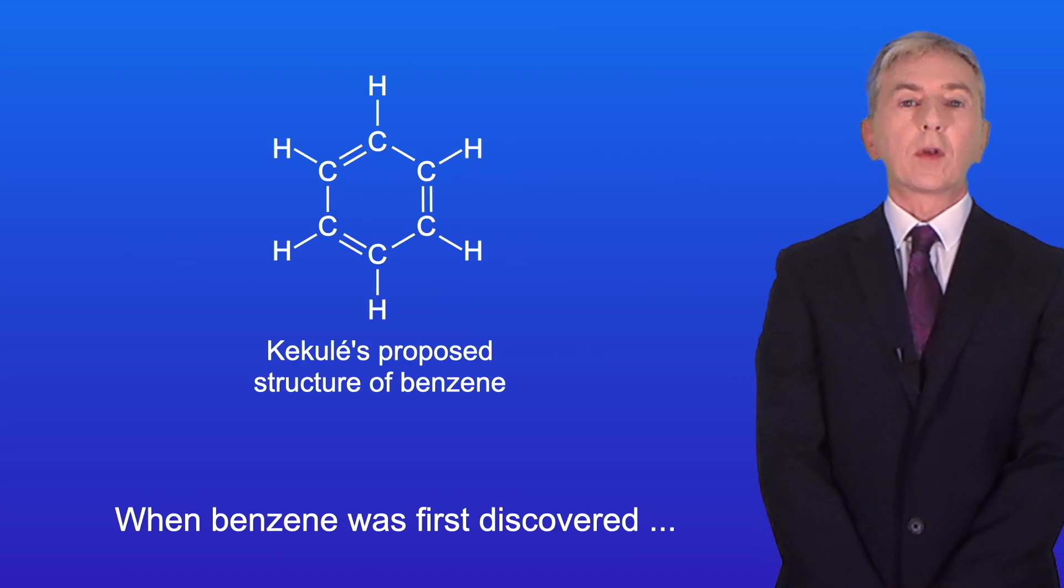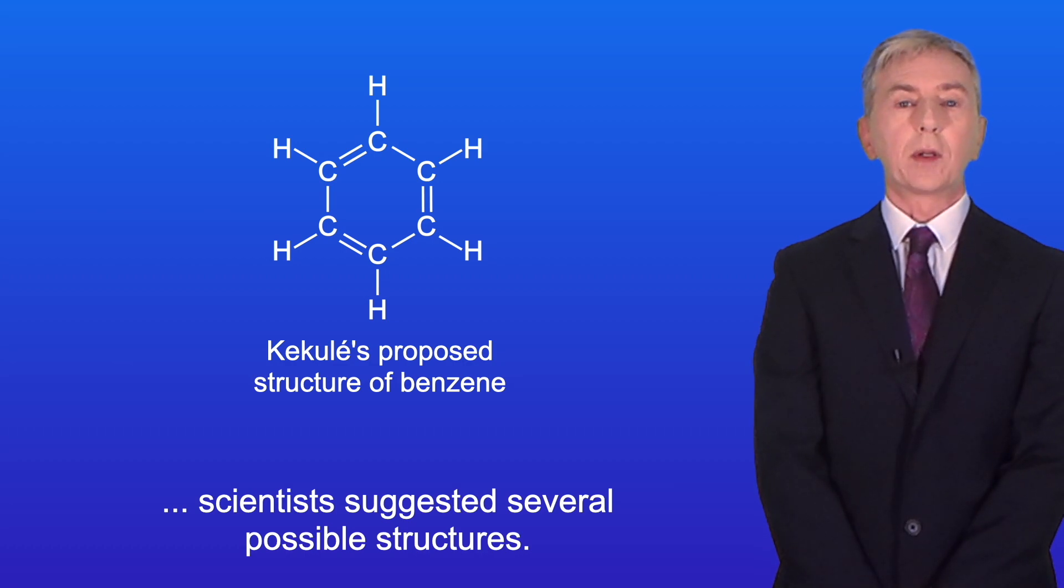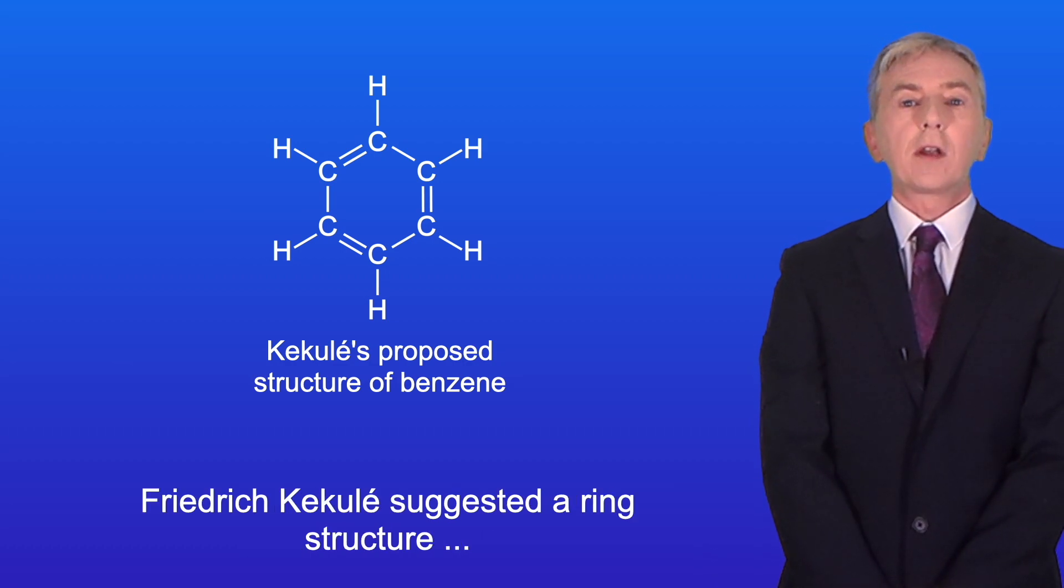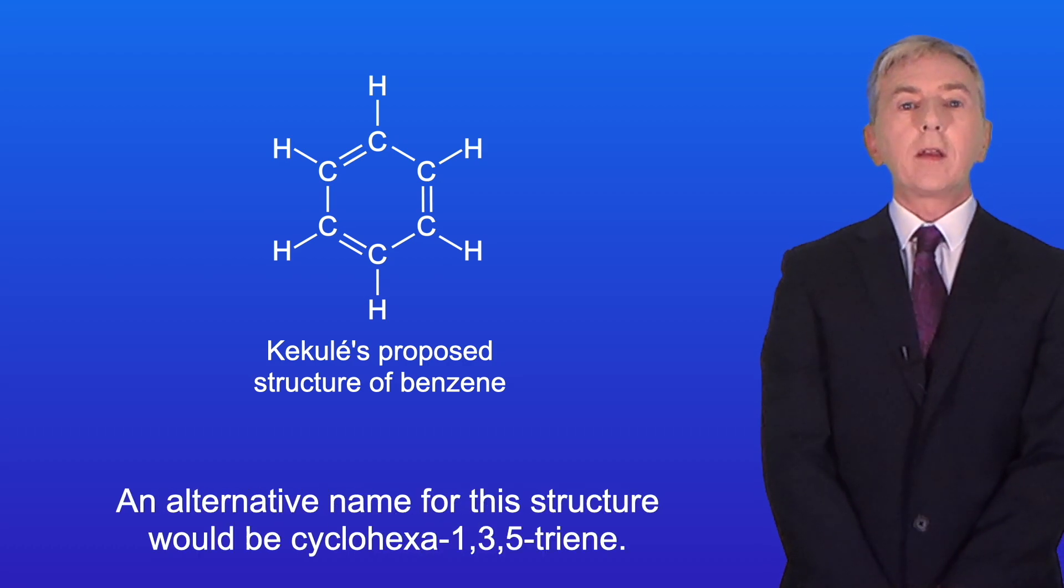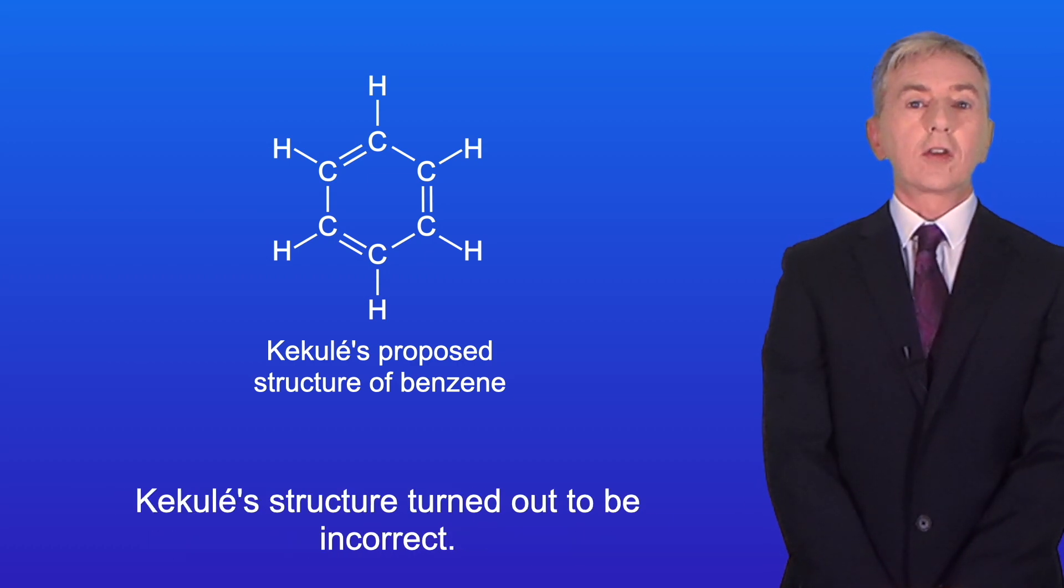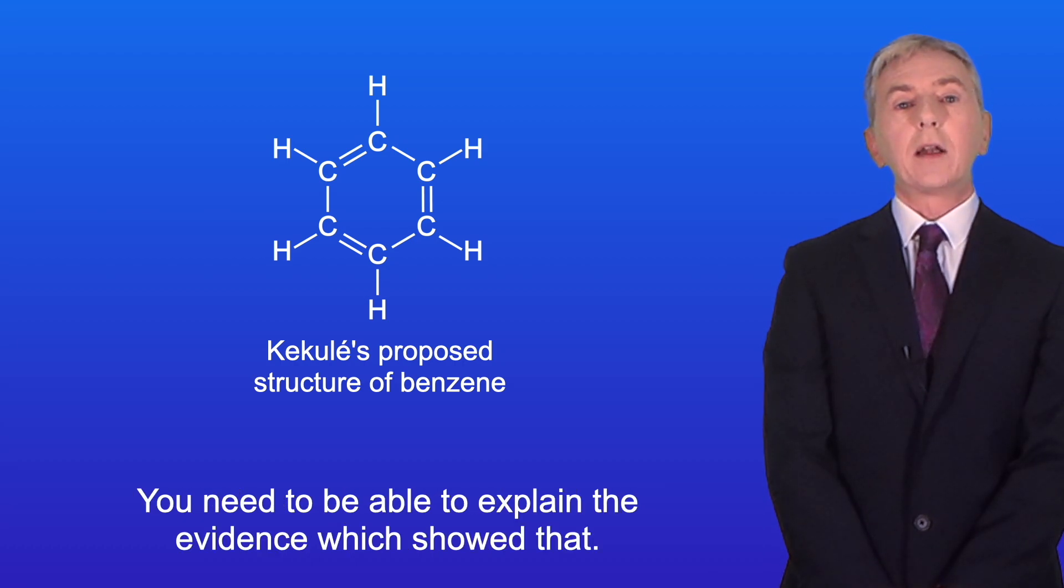When benzene was first discovered scientists suggested several possible structures. Friedrich Kekulé suggested a ring structure with alternating single and double bonds. An alternative name for this structure would be cyclohexa-1,3,5-triene. Kekulé's structure turned out to be incorrect and you need to be able to explain the evidence which showed that.